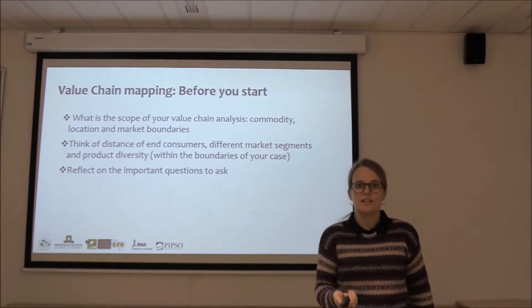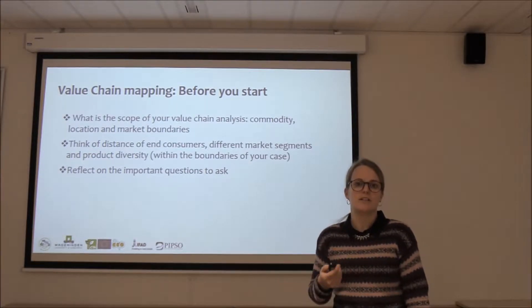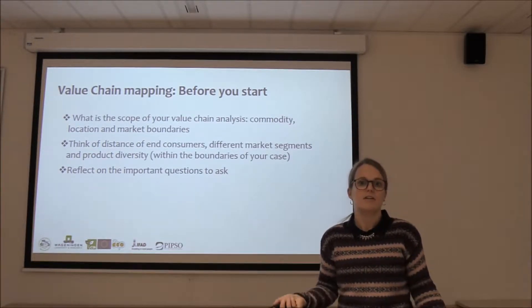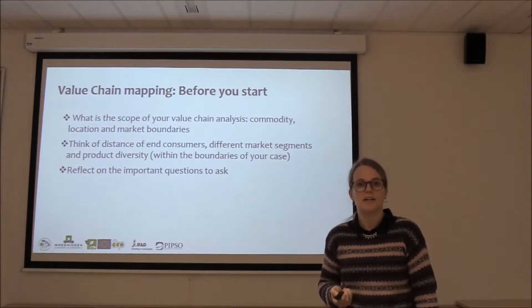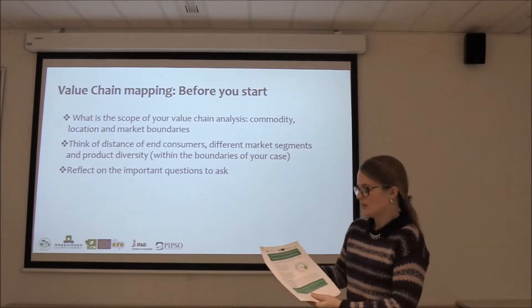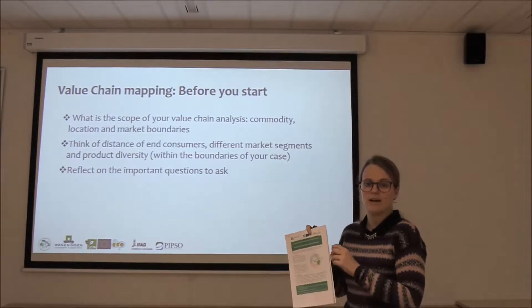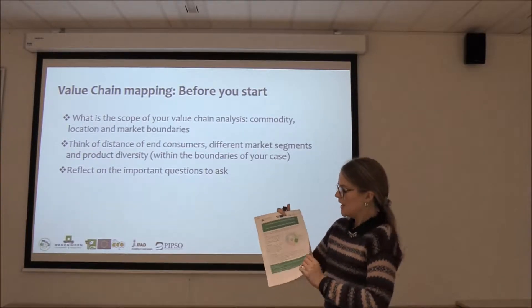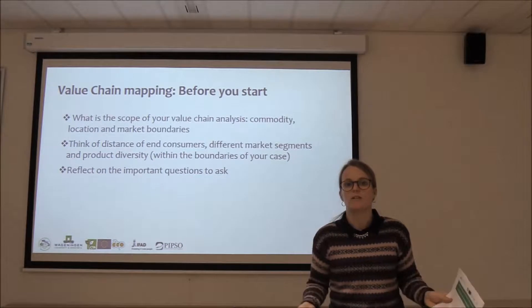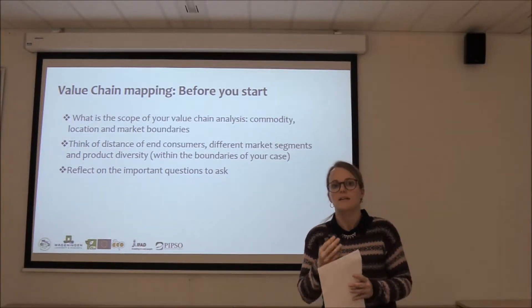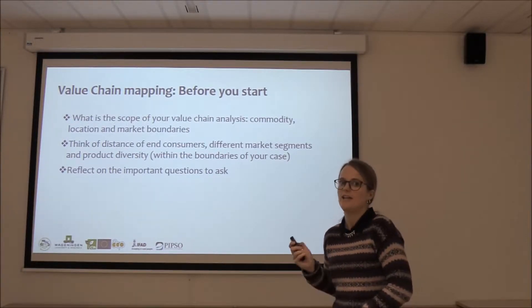Think of the distance to the end consumer or the different market segments and the product diversity. How many products can you get out of one crop, for example? And also reflect on the important questions to ask. There is a document that we have shared and that you can download from our website, Enough for Act Pacific. It will guide you in detail through the different steps and questions so that it is easy for you to do your own value chain map.